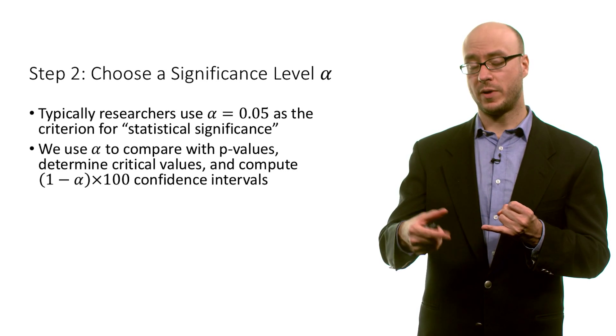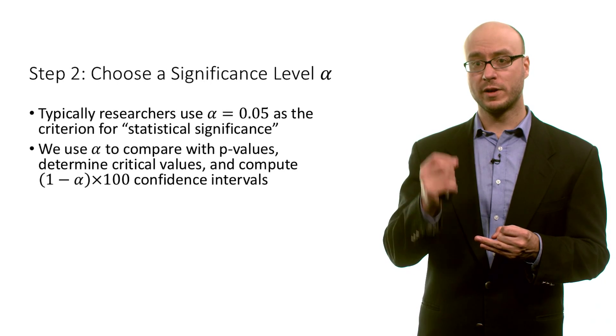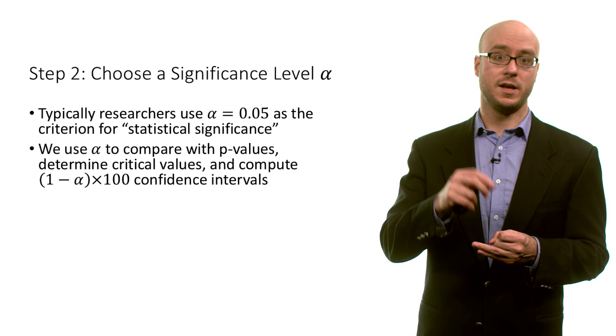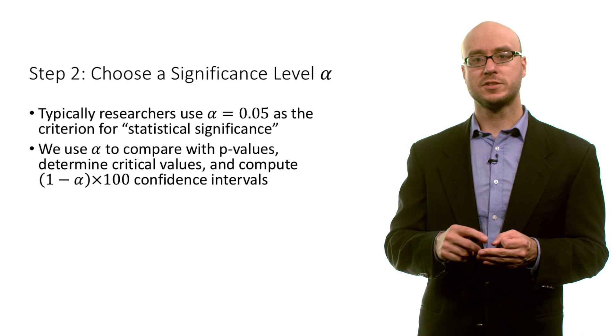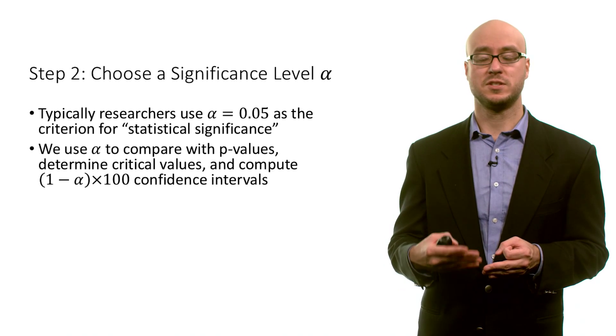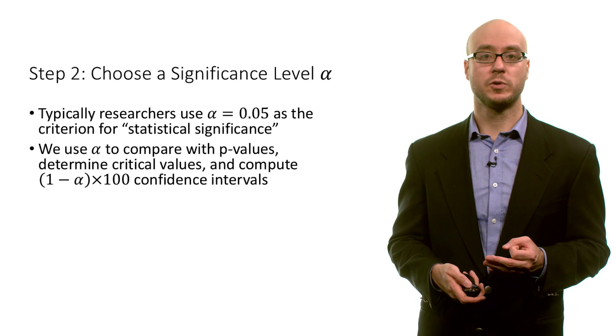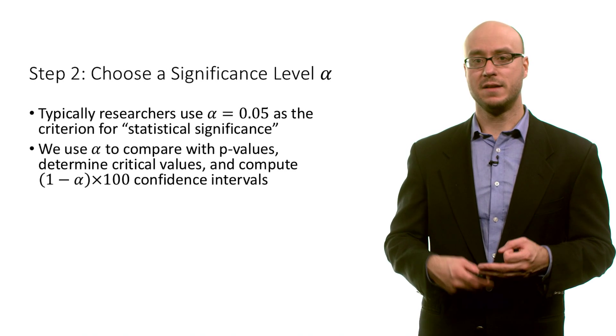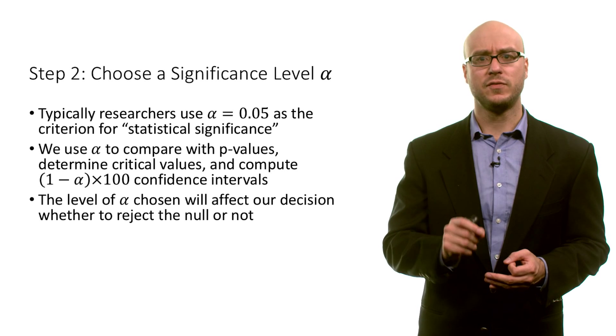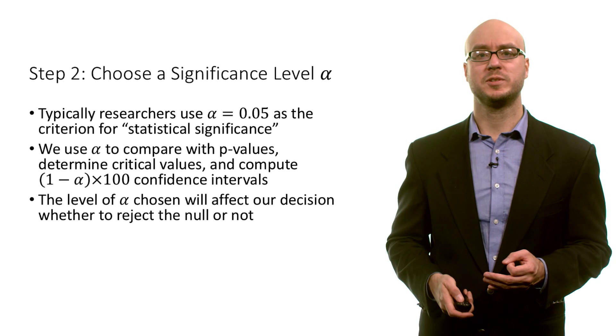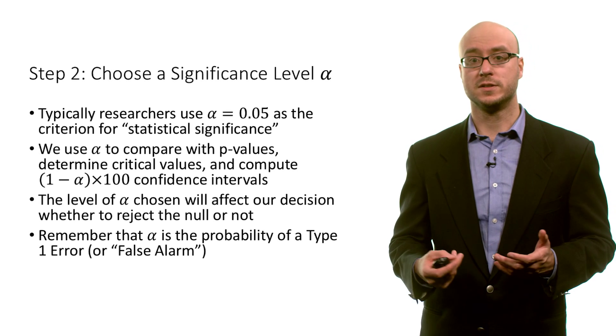We use alpha to compare with our p-values. We also use alpha to calculate the critical values on which we base or evaluate our test statistics. And we also use alpha to compute confidence intervals, because a confidence interval is 1 minus alpha times 100. So if alpha is 0.05, it's 0.95 times 100, a 95% confidence interval. So choosing alpha will affect our decision whether we reject the null or not. And that's because alpha is the probability of a type 1 error or false alarm.